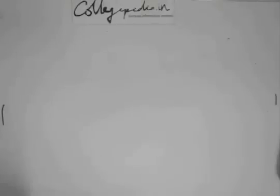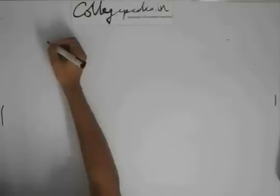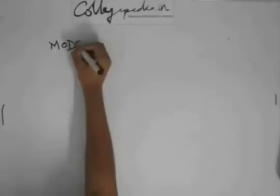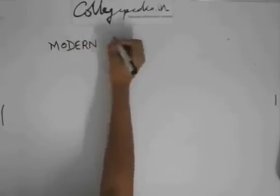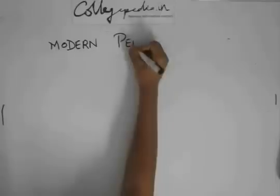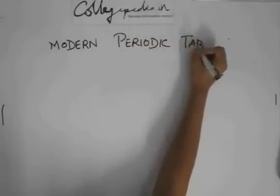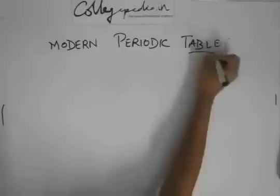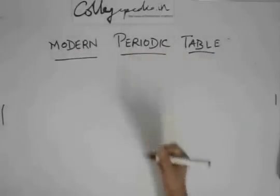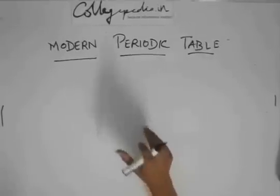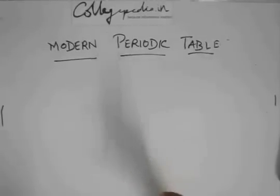Okay, so we were talking about our modern periodic table. Now in the modern periodic table, you can see there are some properties getting repeated.